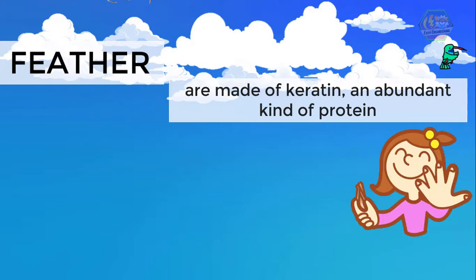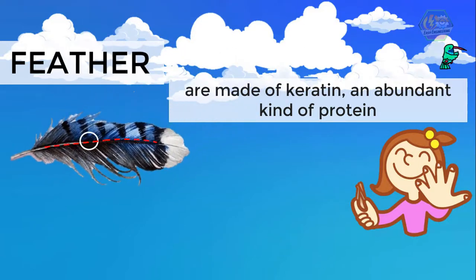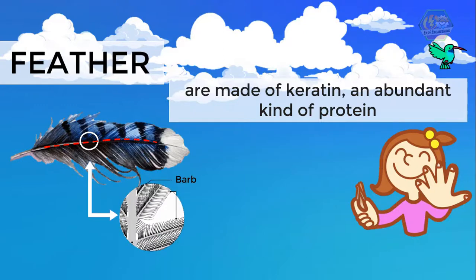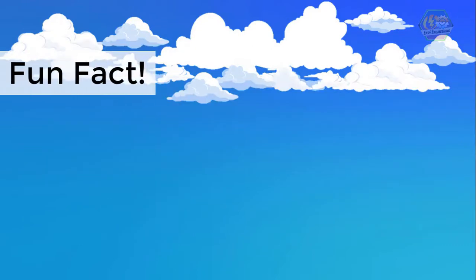Speaking of feathers, what are feathers? Feathers are made of keratin, an abundant kind of protein. Our fingernails are also made of keratin. At the center of the feather is a hollow shaft called the rachis. Attached to this shaft are thin branches called barbs, and then they are connected to even smaller branches called barbules. These parts of the feather are one of the reasons birds fly lightly and beautifully.